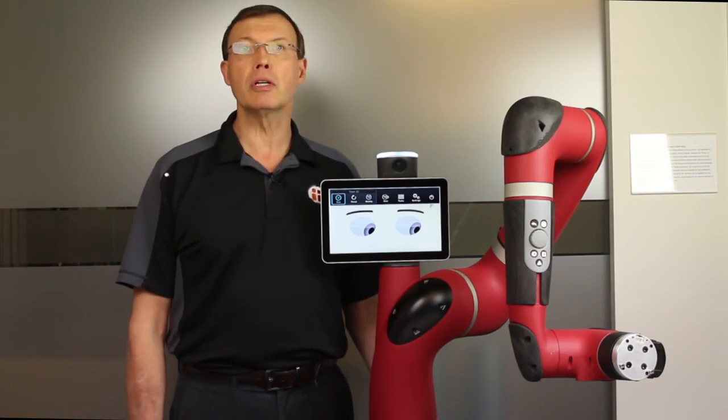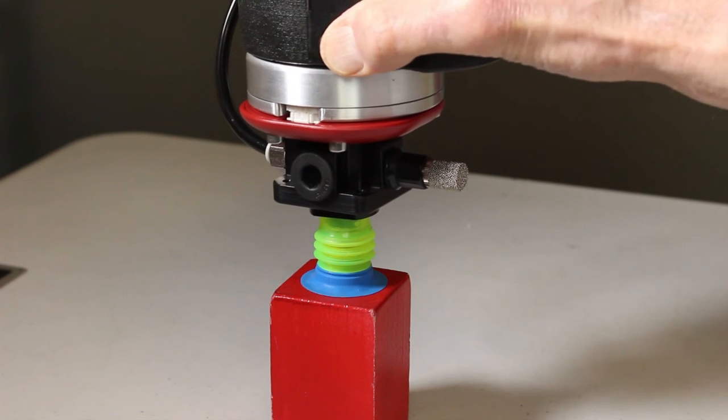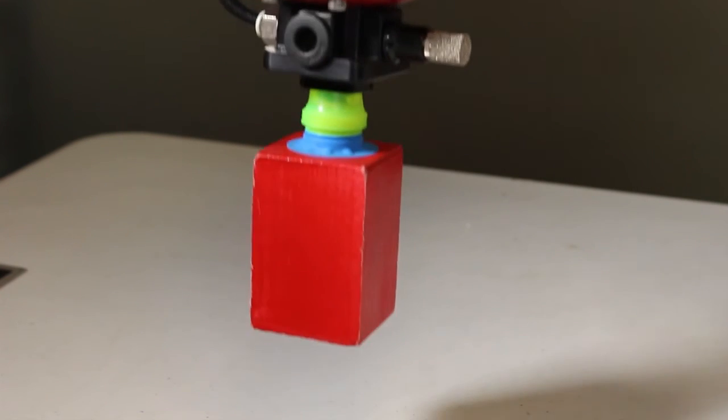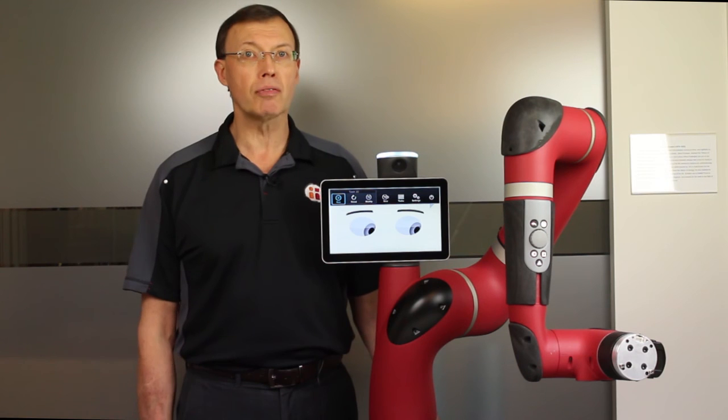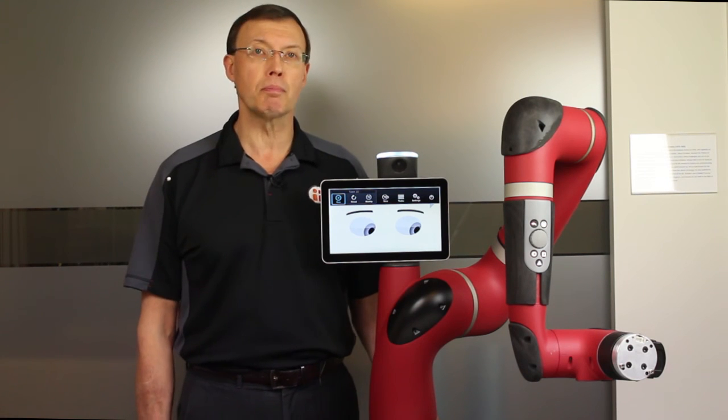Test the operation of the vacuum gripper by pressing the grasp button, the long button, on the training cuff. The vacuum should turn on and off with each press of the grasp button.